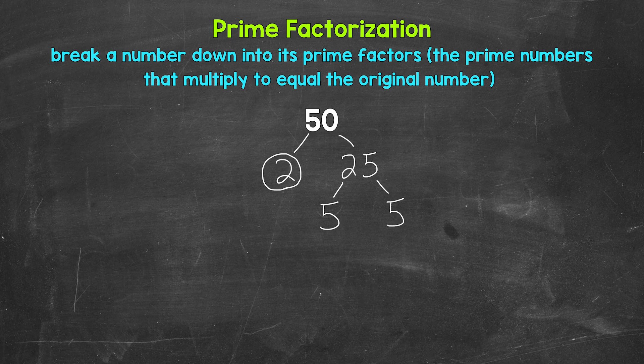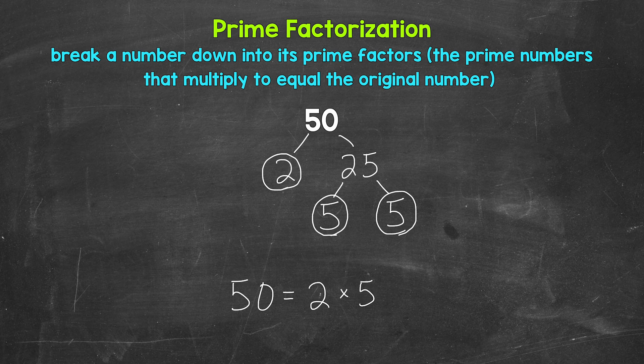Now, 5 is a prime number. So we are done here and here. And that's the prime factorization of 50. We cannot break anything else down any further. We have all prime numbers. So we can write this out as 50 equals, and then we can put our prime numbers in order here from least to greatest. And we are multiplying. So we have 2 times 5 times 5.